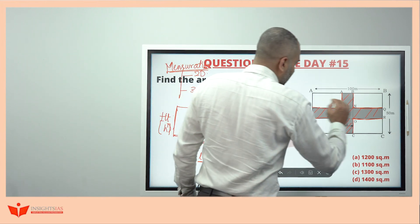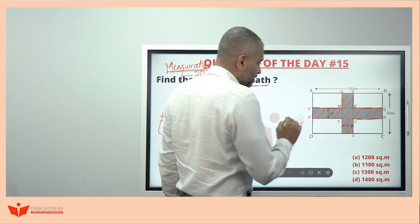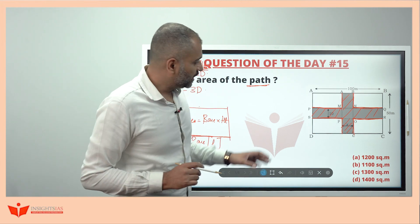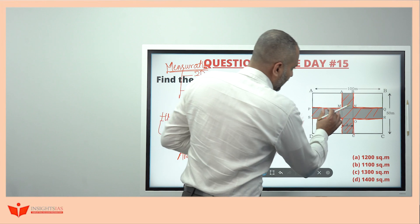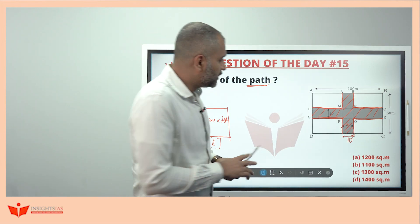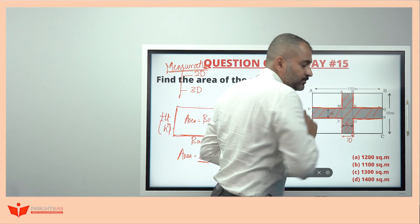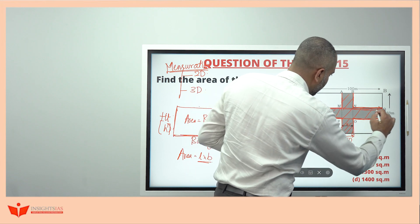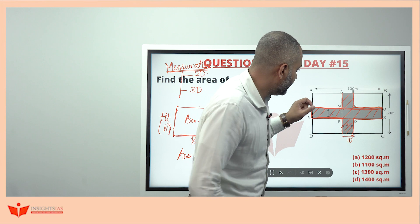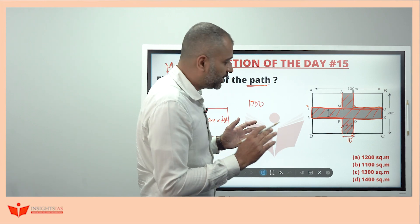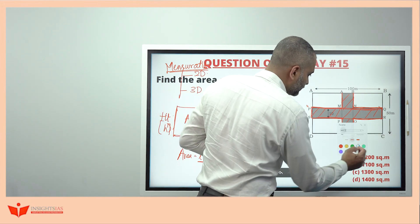This whole area is length into breadth, in which there is a path running — or the path can be midway. There is a rectangular field in which the path runs midway. Now consider this as 10 and this is also 10 — this whole length is 10. I consider this whole thing as a rectangle of height 10 and width 100, so the area becomes 10 into 100, that is 1000.